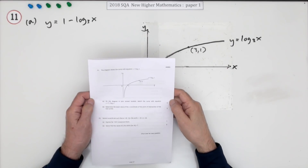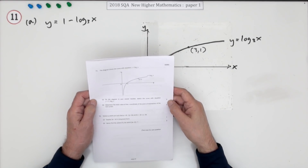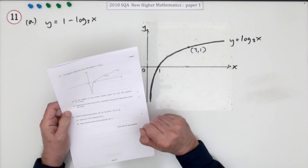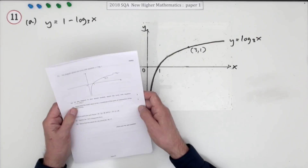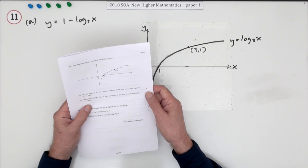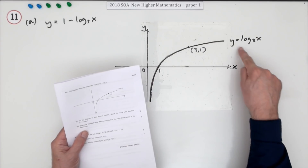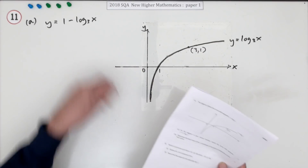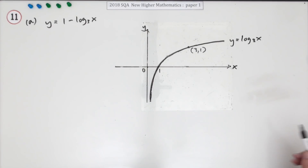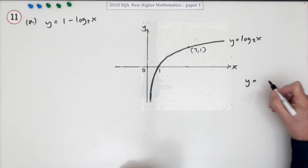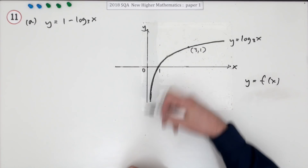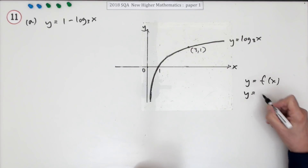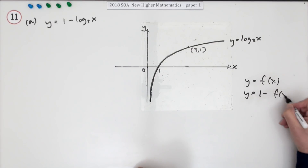Question 11 from the 2018 SQA Higher Maths Paper 1 — a five-mark question in two parts. You've got a graph and you've got logs. The first part, for two marks, you're shown the graph of y equals log base 3 of x, and you have to sketch the graph of 1 minus log base 3 of x.